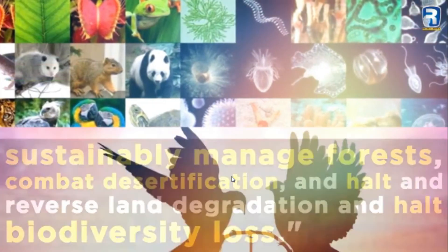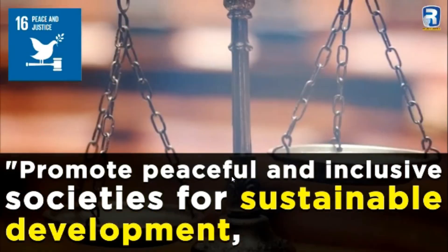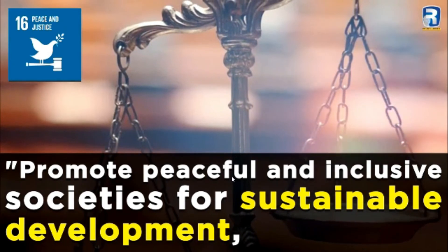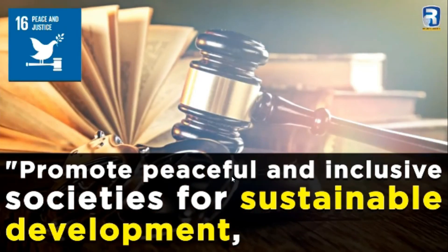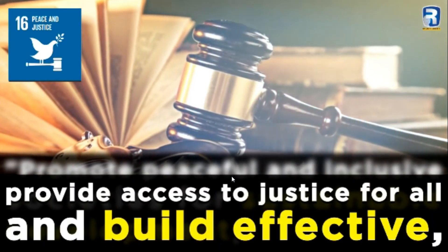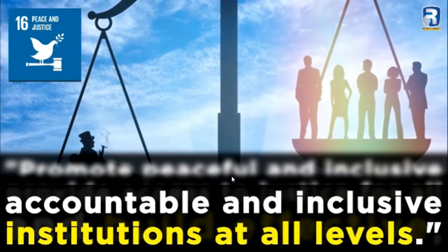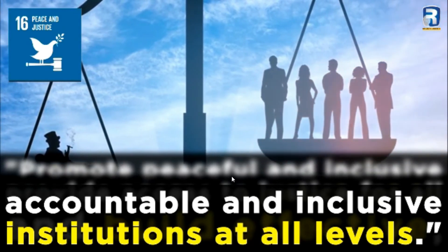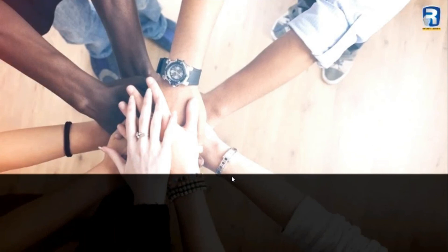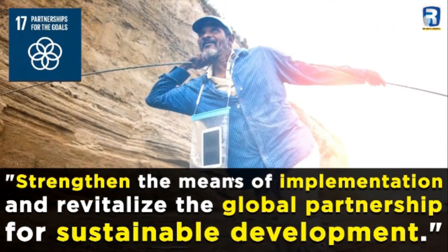Goal Number 16 talks about peace and justice — one of my favorite goals. It talks about provision of inclusive, sustainable justice to all human races, irrespective of their societies, ethnic affiliations, gender, or social and national affiliations. It calls for free and fair justice for all, building an effective judicial system for all people, and empowering the institutions that provide justice.